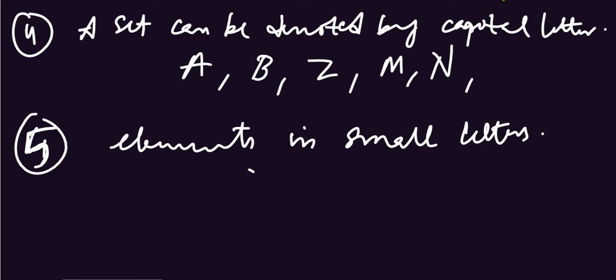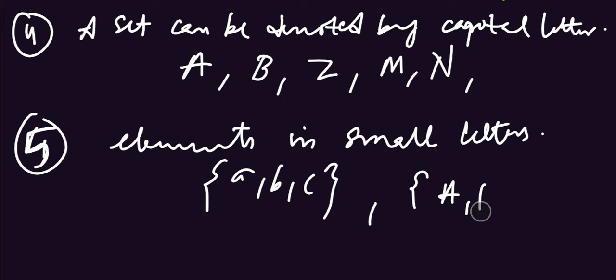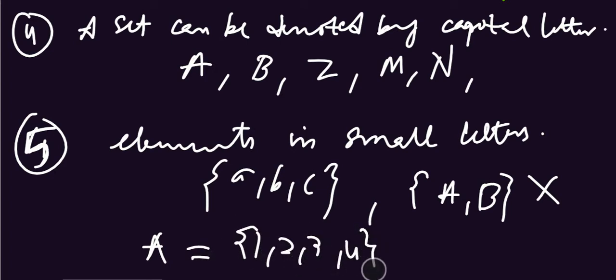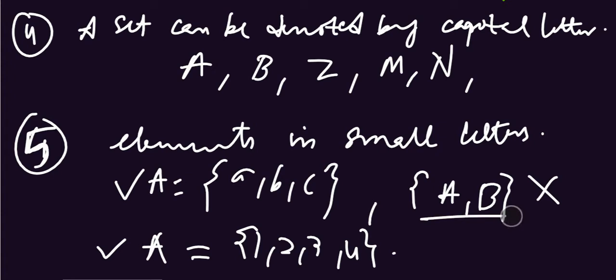Just like {a, b, c} — this is a set. But {A, B} — this is not a set. Also, elements can be numbers, so {1, 2, 3} is also a set. But a set with elements in capital letters is not valid. These are all the points you have to remember.